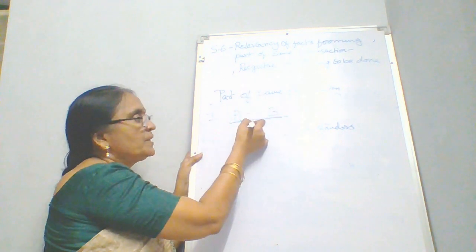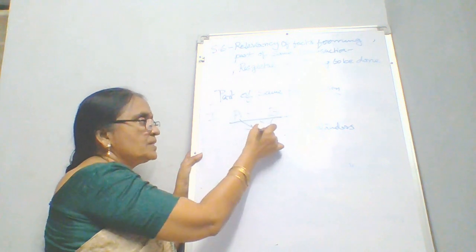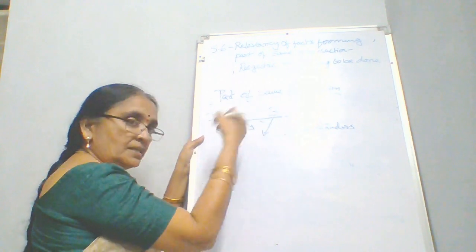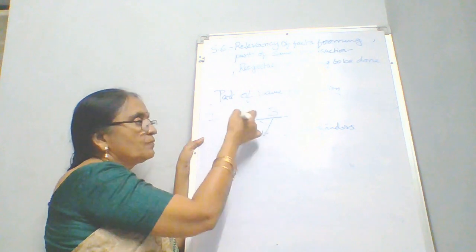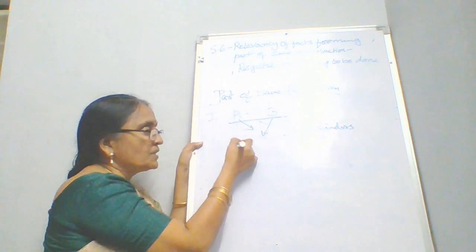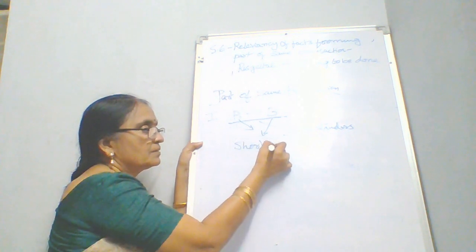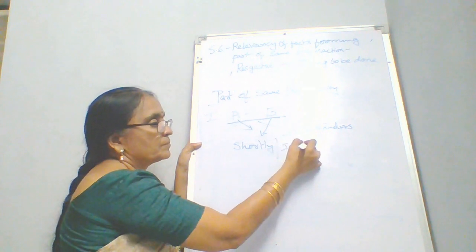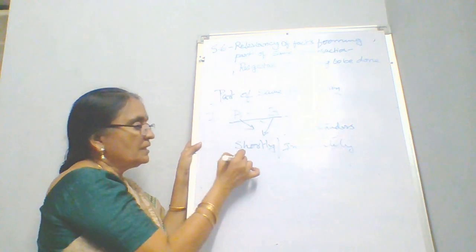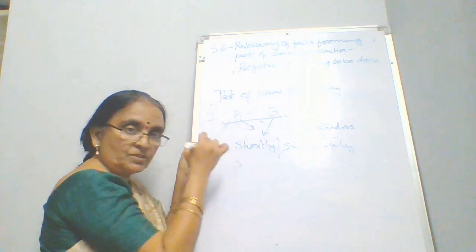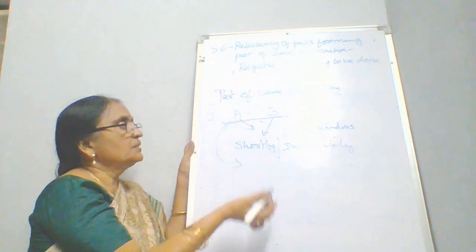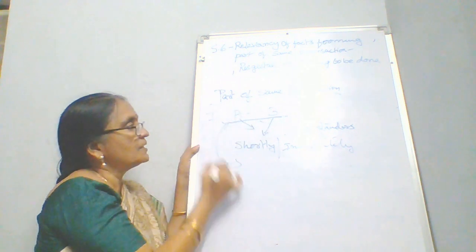At that time, A may utter some words and B may also say something. Based on these particular words, the relevancy of other incidents will be decided by the court — whether they become part of the same transaction or not. If things happen shortly or immediately, it is very easy to connect them with the present incident. If not, it is a little bit difficult to prove that they are part of the same transaction.